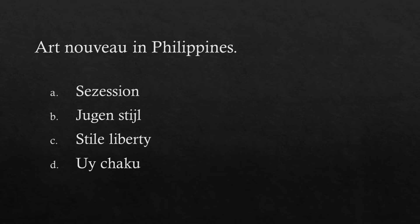Art Nouveau in Philippines: a. Sezession, b. Jugenstijl, c. Style Liberty, d. Uichaku. Answer: Uichaku. Art Nouveau in Italy: a. Sezession, b. Jugenstijl, c. Style Liberty, d. Uichaku. Answer: Style Liberty. Art Nouveau in Germany: a. Sezession, b. Jugenstijl, c. Style Liberty, d. Uichaku. Answer: Jugenstijl.